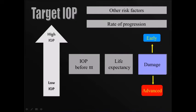Then the amount of damage when you first see the patient. If you see the patient with advancing glaucoma changes in the field or in the OCT or in the disc, then you go for low IOP. On the other hand, if the amount of damage is minimal, then you can go for a high target IOP.